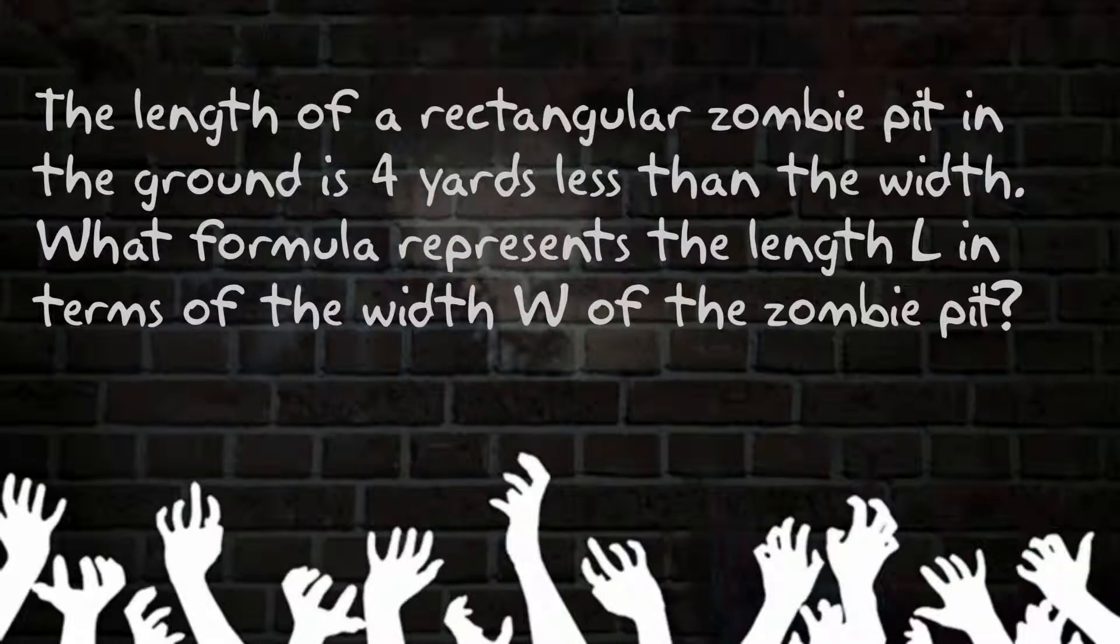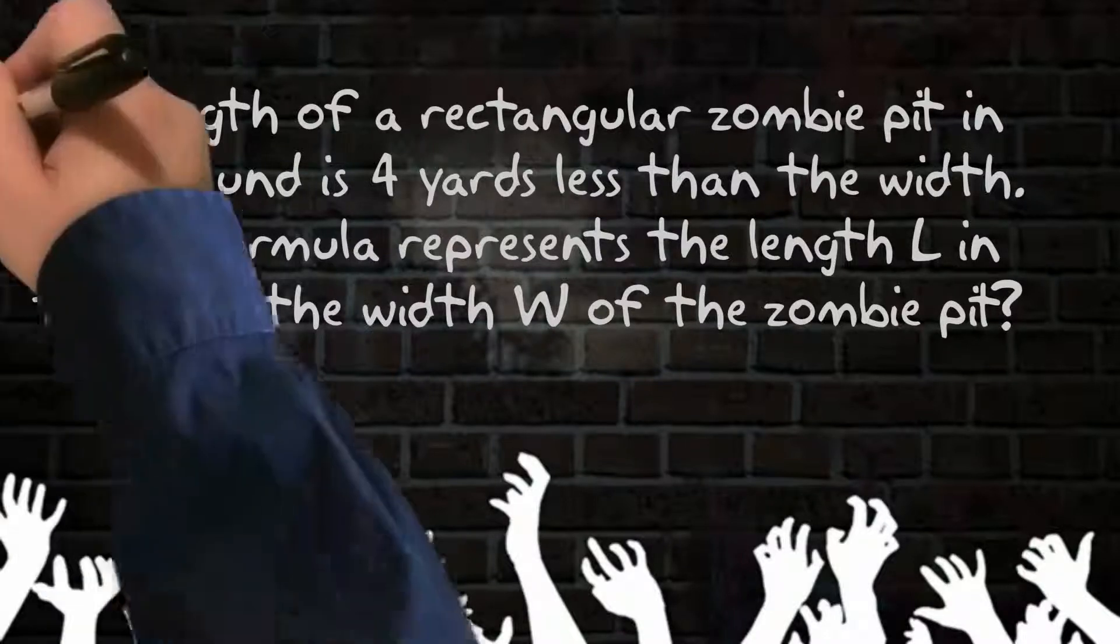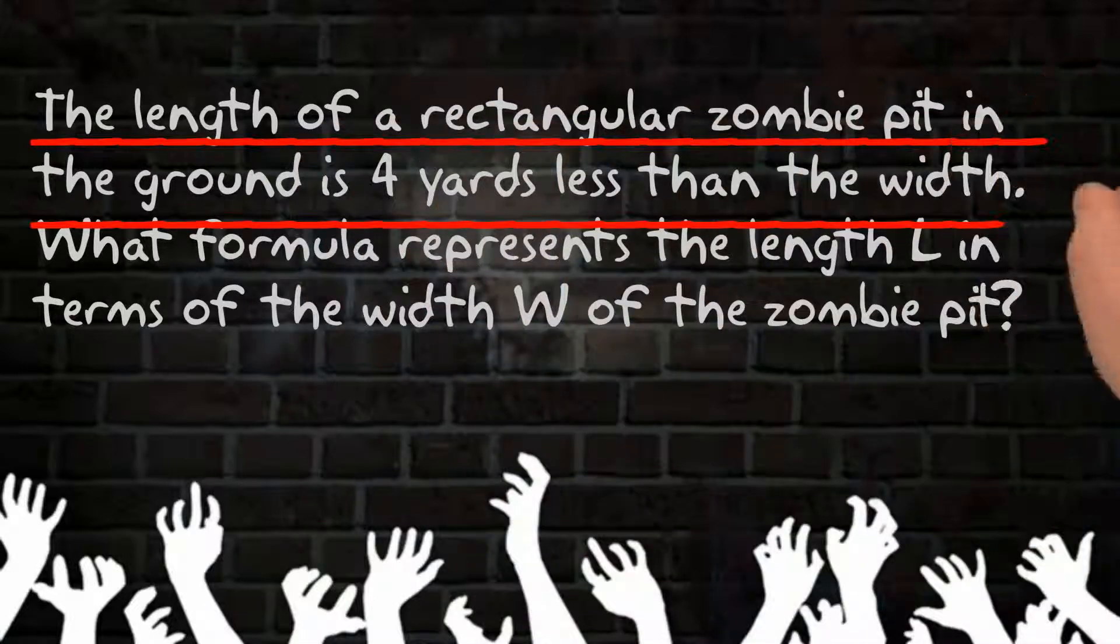Let's go ahead and dissect our word problem. Take a look at the first sentence. The length of a zombie pit in the ground is four yards less than the width.